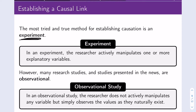In particular, what we're going to be calling a randomized experiment. In an experiment, the researcher actively manipulates one or more explanatory variables. In the case of a randomized experiment, what the researcher is going to do is randomly assign the levels of the explanatory variables.